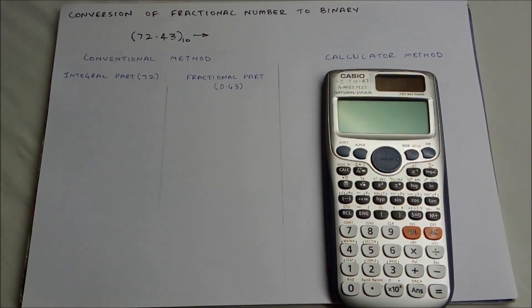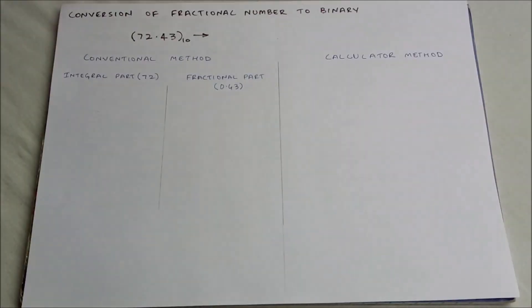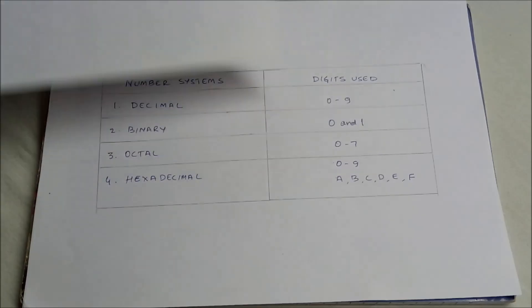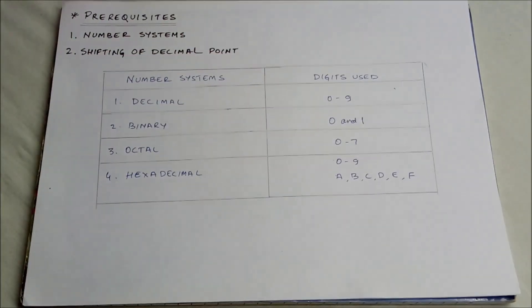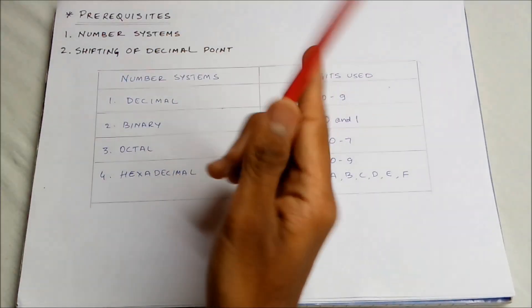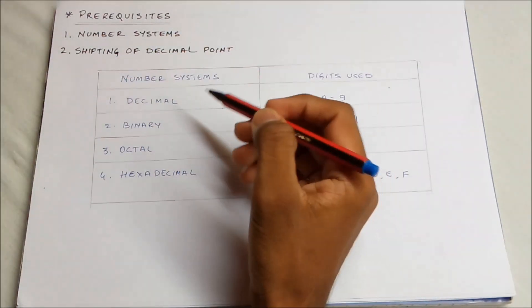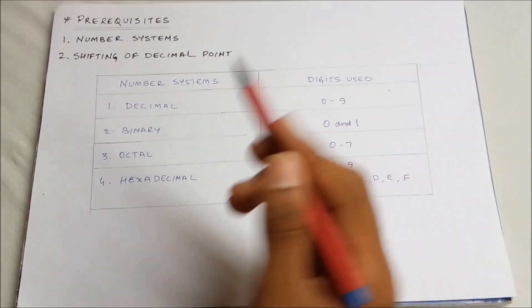So before we begin, let's first understand some basic prerequisites required for this video. The first one is the number system, and the second one is the shifting of a decimal point in a number. So these are some of the most commonly used number systems.